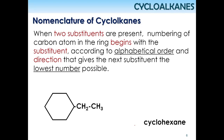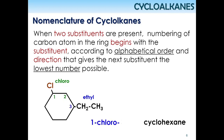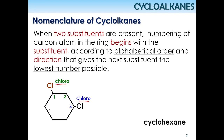For a cyclohexane ring with an ethyl group and a chloro group: alphabetically, C comes before E, so chloro gets position one. The ethyl is at position three, giving 1-chloro-3-ethylcyclohexane. If both substituents are the same — for example two chloro groups — the name uses the prefix 'di': 1,3-dichlorocyclohexane, where 'dichloro' refers to two identical groups attached to the ring.